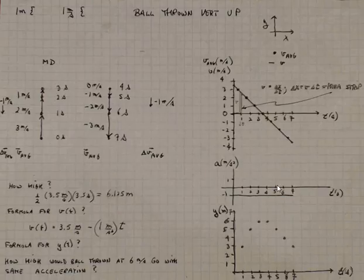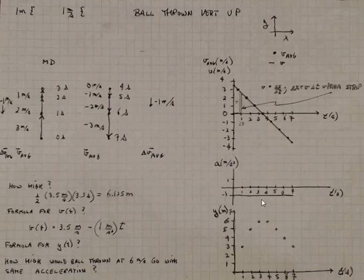The next plot is acceleration versus time. Acceleration is basically delta V — minus one meter per second — divided by one second, giving minus one meter per second per second. It's constant and negative one.